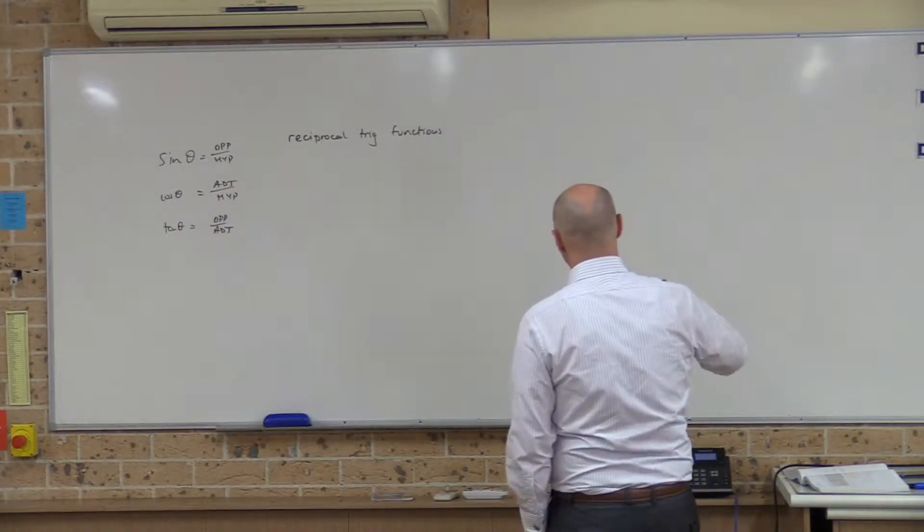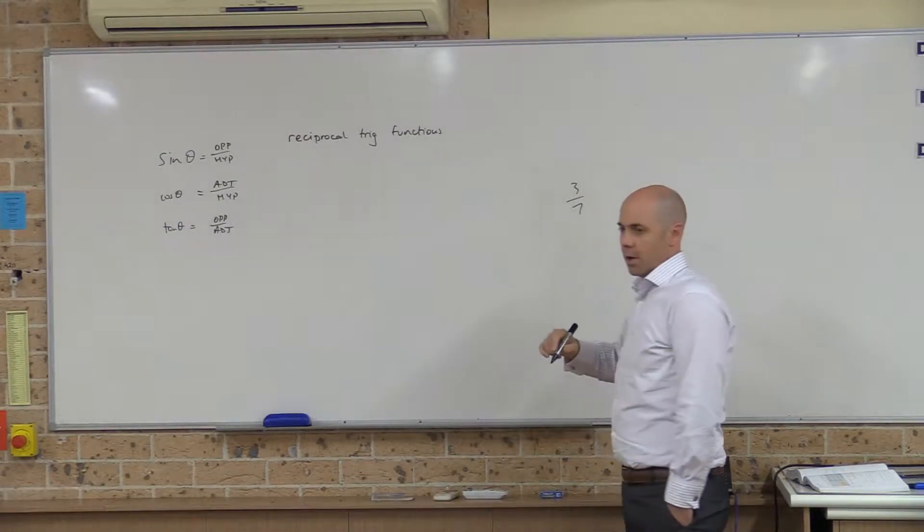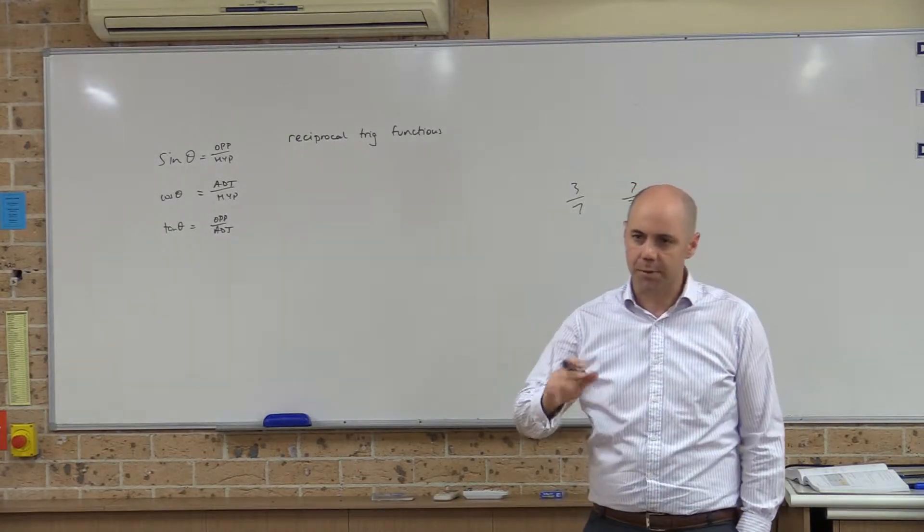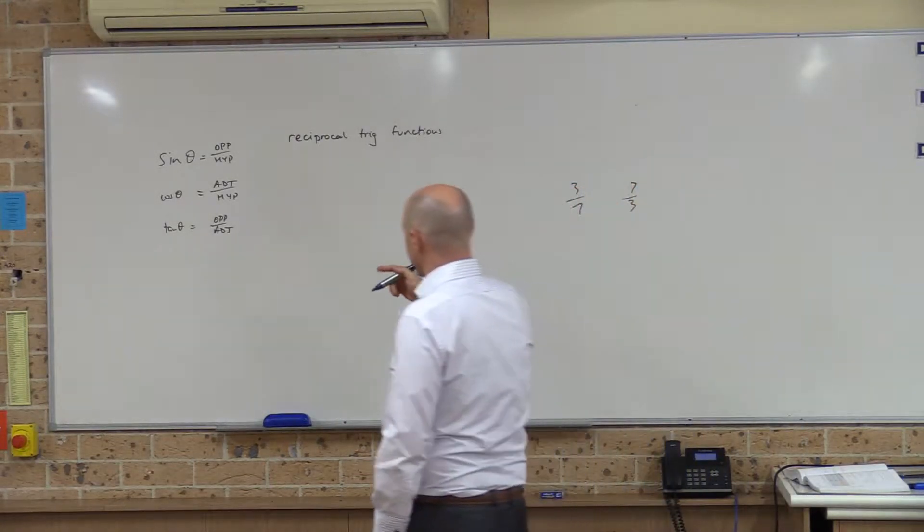We've had that before, 3 over 7, the reciprocal of that is 7 over 3. That's what reciprocal means, flipped upside down. And so it's exactly the same thing here.